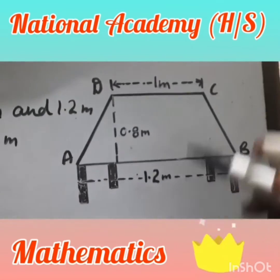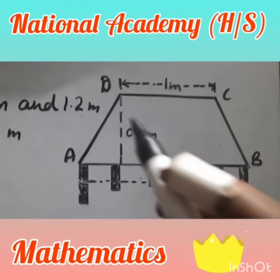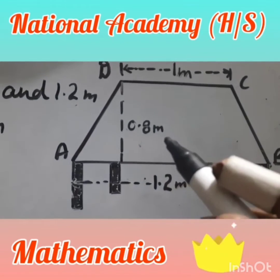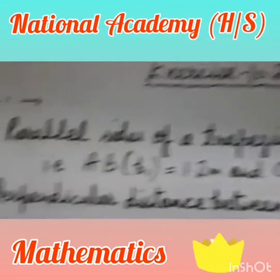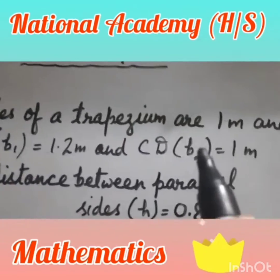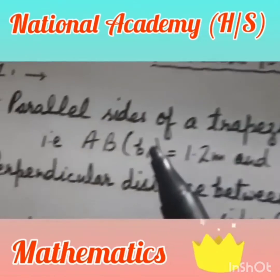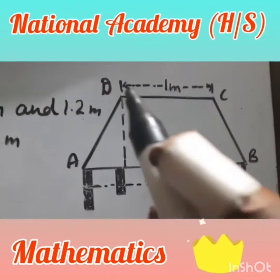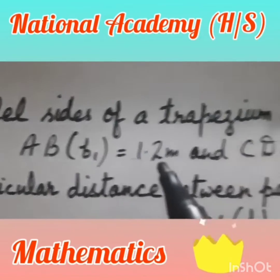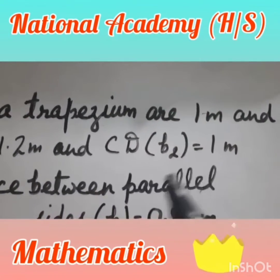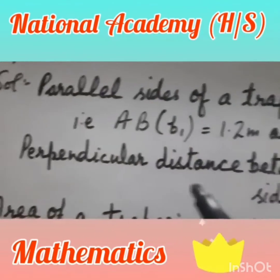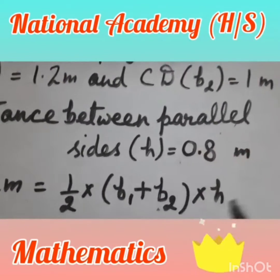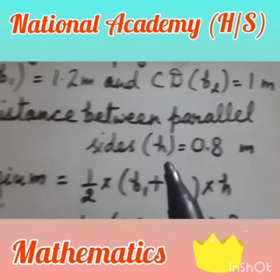The figure is given. The parallel sides are 1 meter and 1.2 meter — that is, AB = 1.2 meter and CD = 1 meter. So B1 = 1.2 m and B2 = 1 m. The perpendicular distance between the parallel sides (height H) is 0.8 meter.